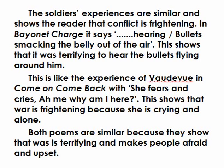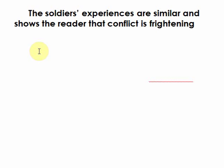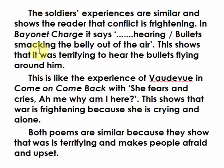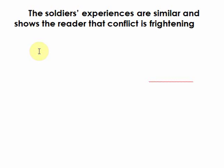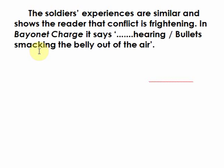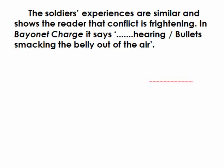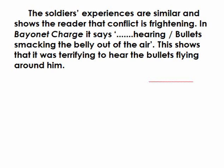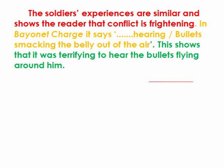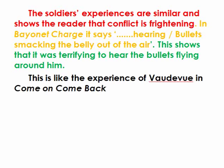First of all we looked at a very simple example of how you structure this sort of response. The first bit: 'The soldiers' experiences are similar and show the reader that conflict is frightening.' That is a topic sentence which makes a comparative point — in both poems the conflict is frightening. It's a pretty simple point but it's a point. Then: 'In Bayonet Charge it says: hearing bullets smacking the belly out of the air.' That's the quotation. Next, explanation: 'This shows that it was terrifying to hear the bullets flying around him.' Very simple — point, evidence, explain. It's not very good, it won't get you a high mark, but as a basis that's basically what you're trying to do.